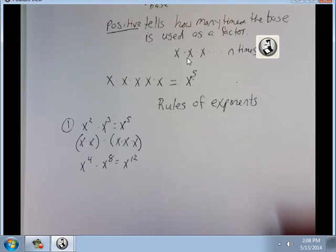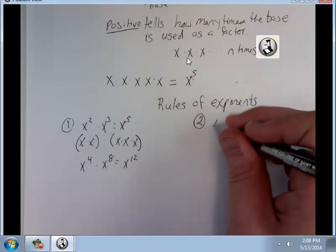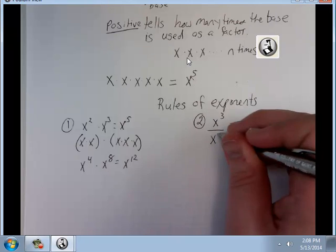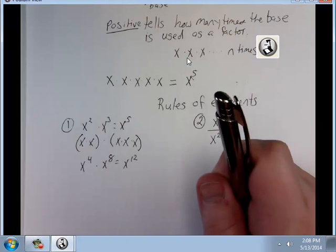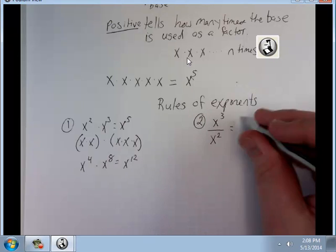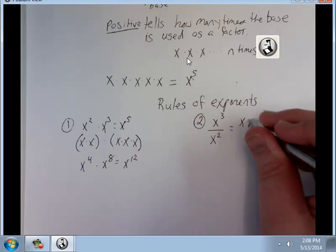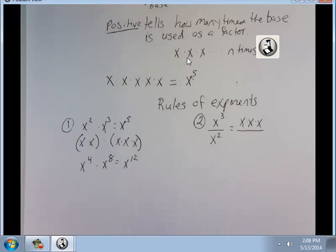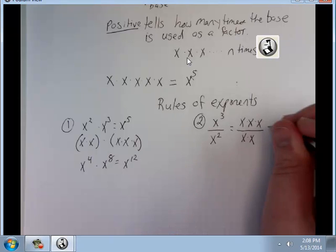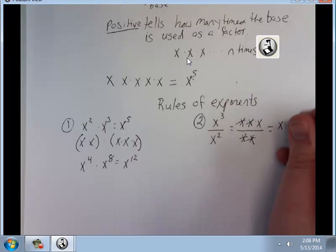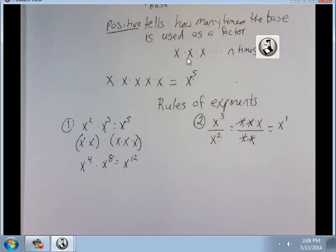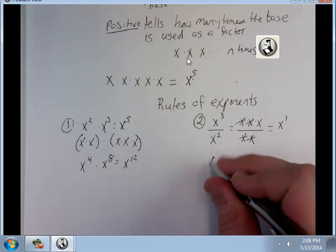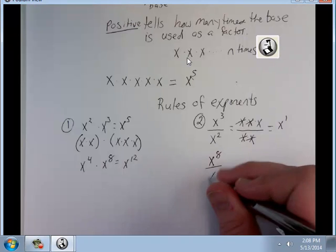Let's look at division. x cubed divided by x squared. x cubed we can rewrite as x times x times x, and x squared we can write as x times x. Those two x's cancel, leaving me with x to the first. So I just subtract the exponents when I divide. Going back to this example, x to the eighth divided by x to the fourth equals x to the fourth.